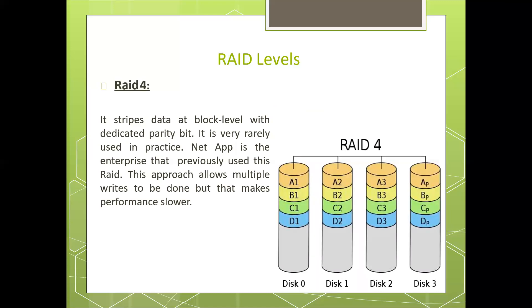RAID level 4 stripes data at the block level with a dedicated parity bit. It is very rarely used in practice — NetApp is an enterprise that previously used this RAID. This approach allows multiple writes to be done but that makes performance slower.